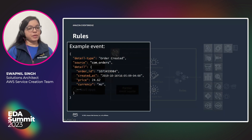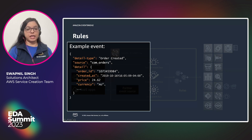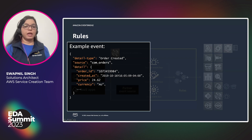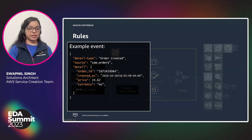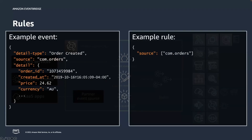Here is an example event. We are creating a detail-type of "order created," indicating that an order was created, and the source is com.orders. If you want to listen to these events, you create a filter with the source com.orders. This example rule states that any events arriving at EventBridge with source com.orders should be filtered and sent to the target associated with this rule.